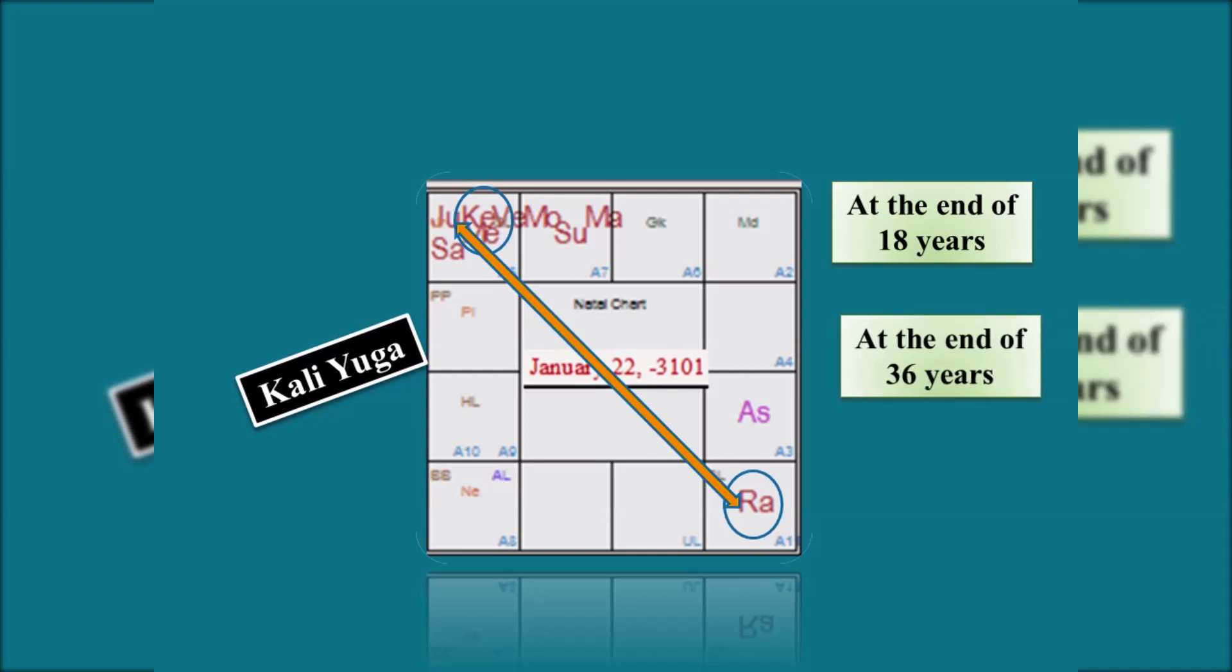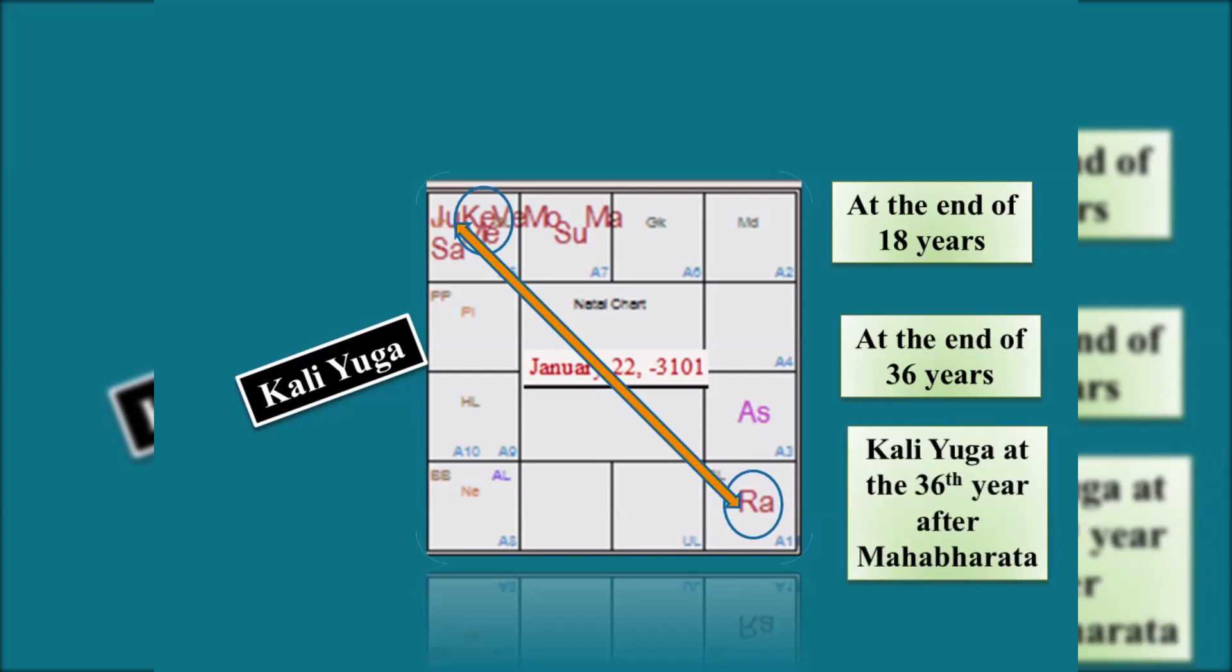The same way you can check for the previous years also. 36th year before the Kali Yuga, Mahabharata war had happened. That means at that time also, the nodal axis must have been here.